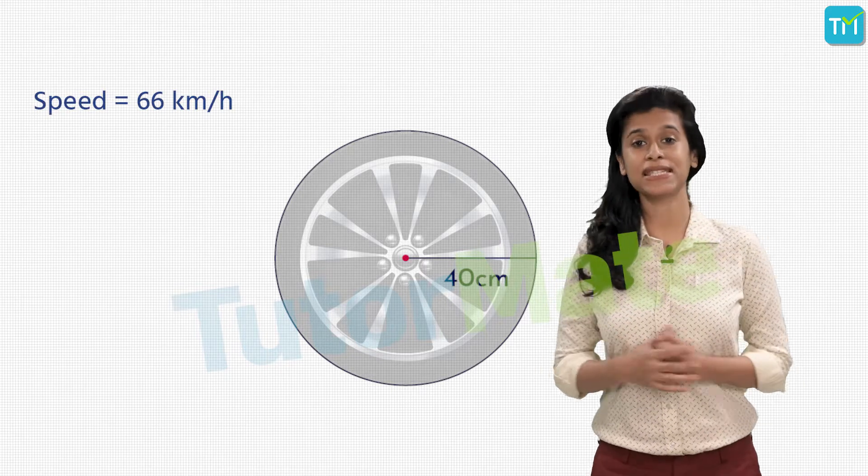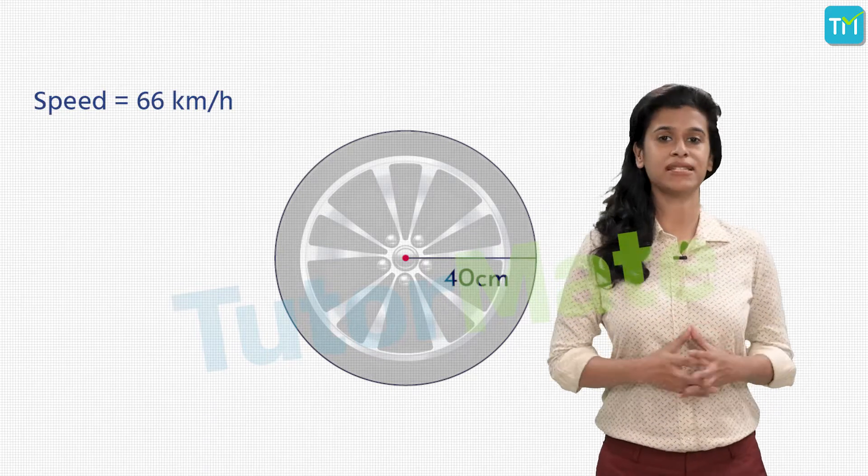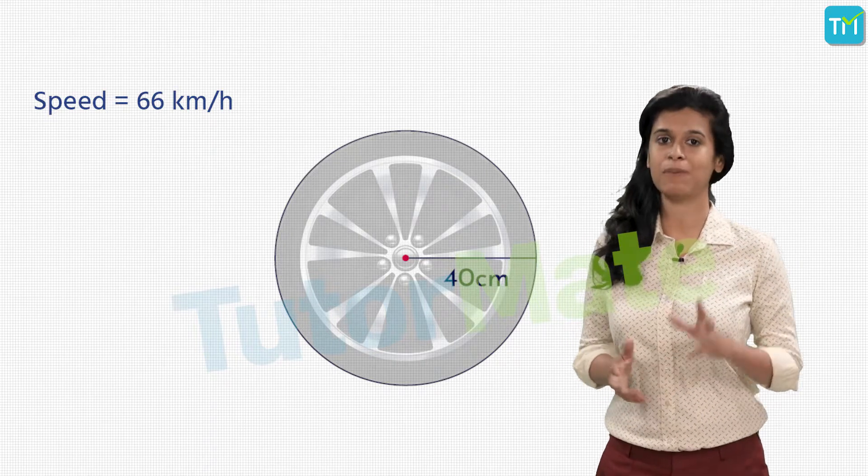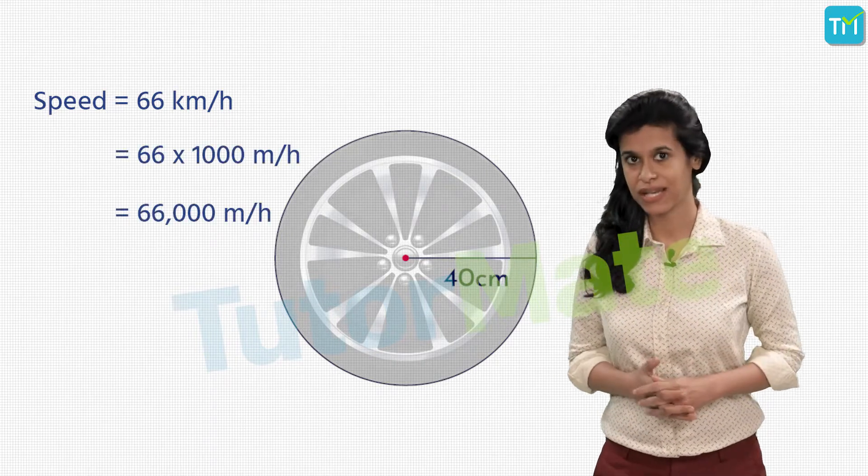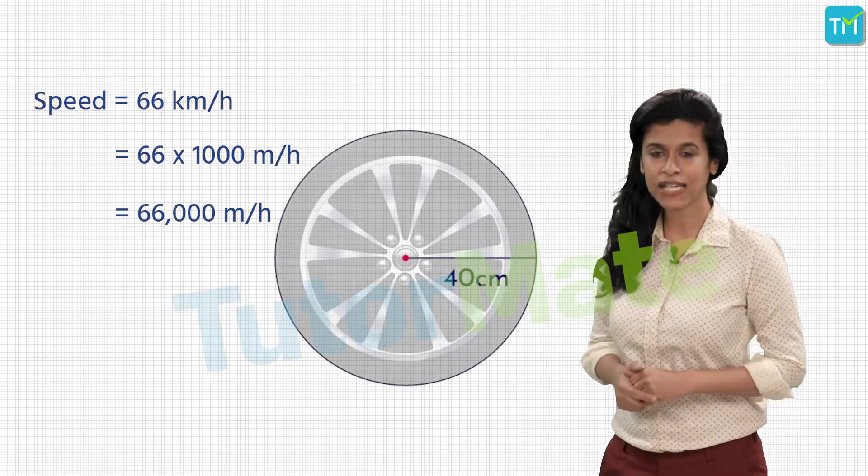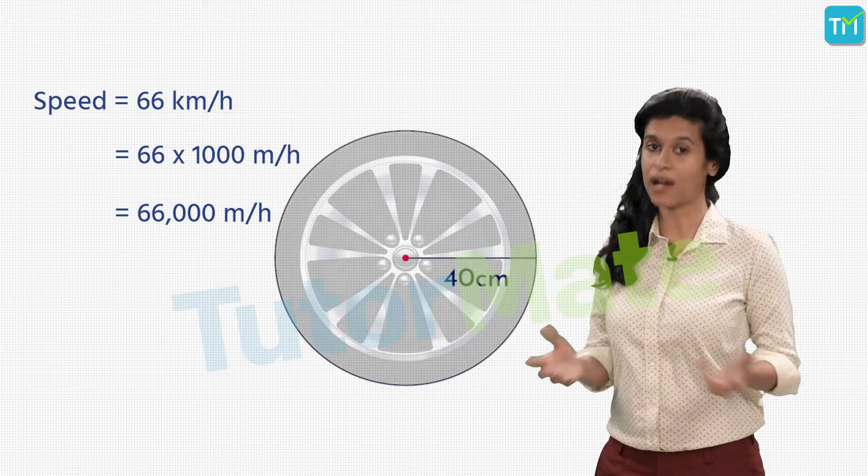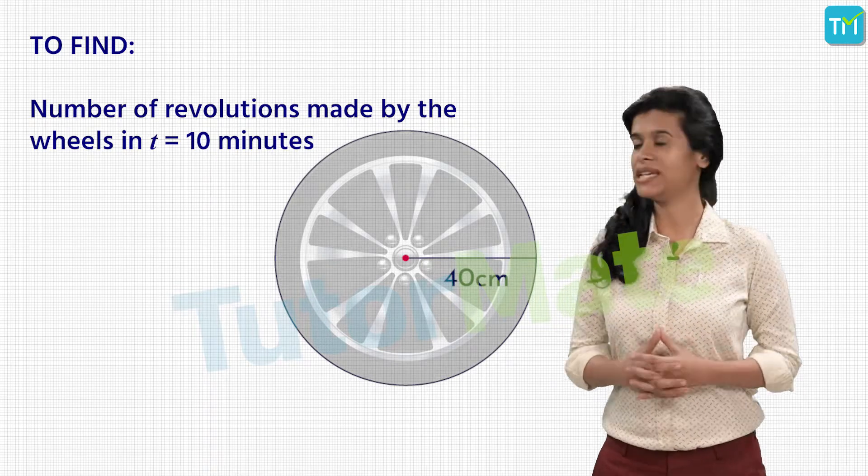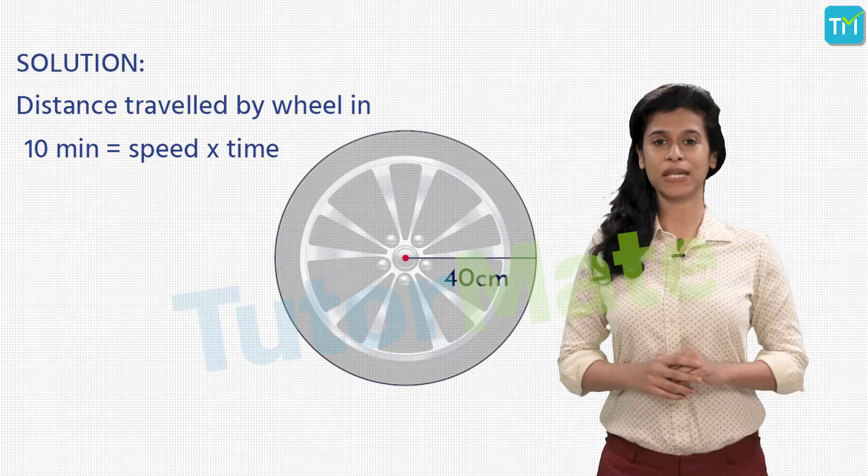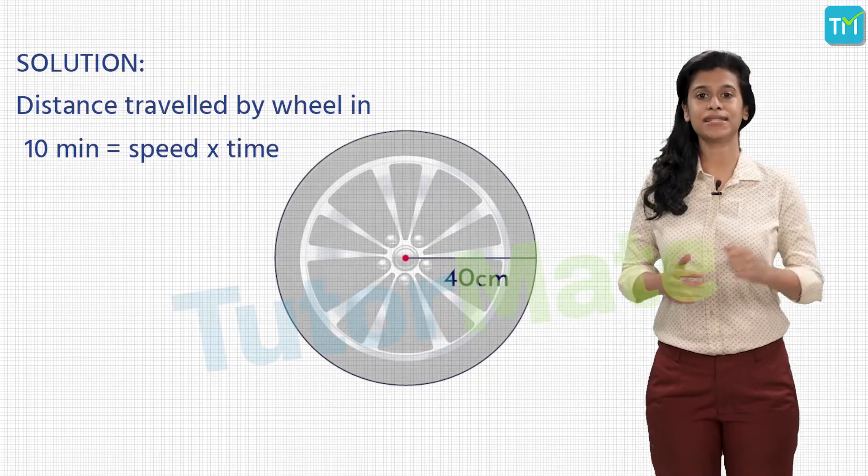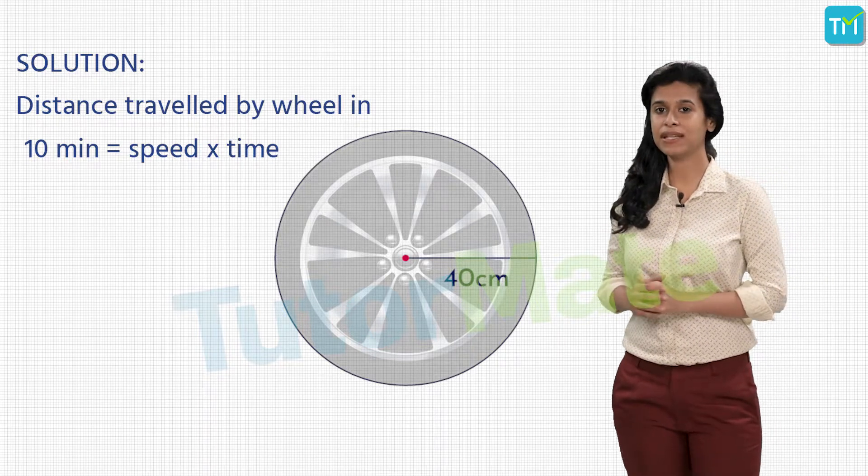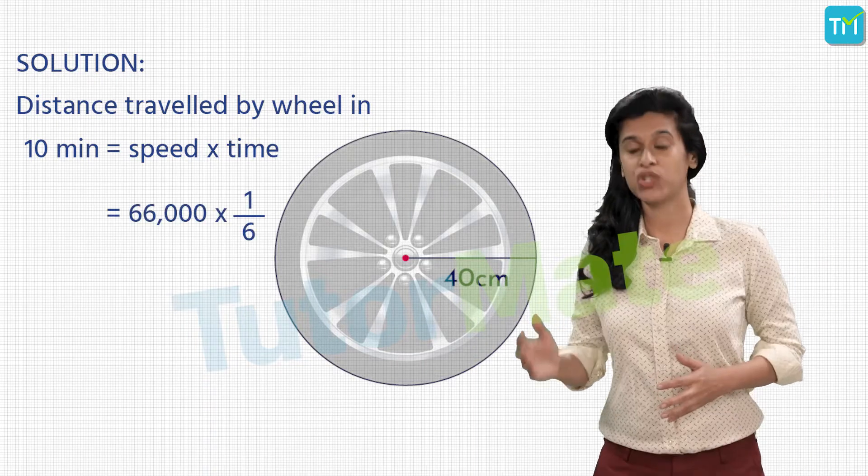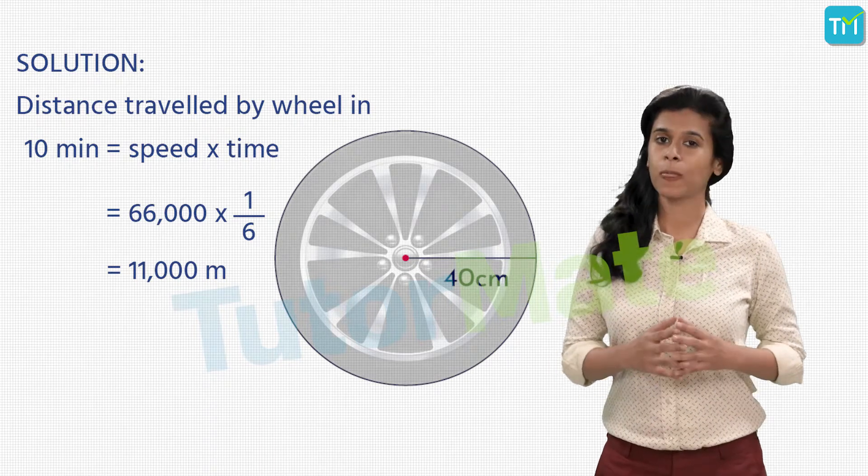The speed is given as 66 kilometers per hour, but we represented the radius in meters. So let's represent the speed in meters per hour by multiplying by 1000. That gives us 66,000 meters per hour. Using this, we want to find the number of revolutions in 10 minutes. Distance equals speed times time, so the distance traveled in 10 minutes equals 66,000 times 1 by 6, which equals 11,000 meters.